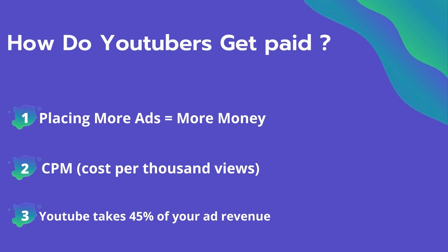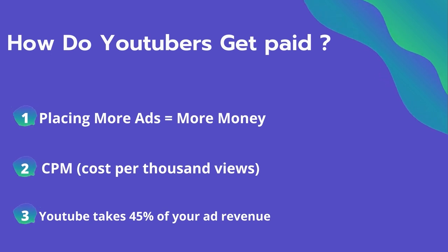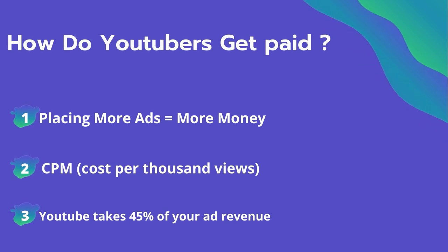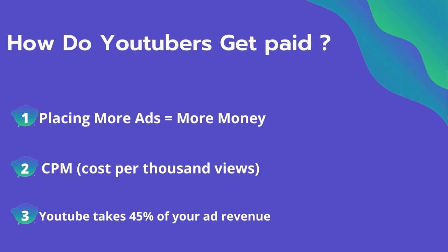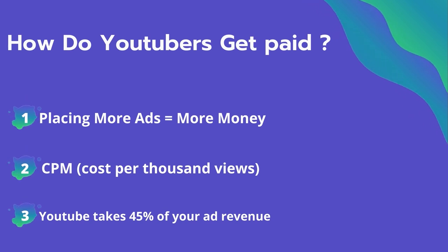The second thing is CPM — it means the cost per thousand views. It's the amount an advertiser pays to have his ad in your video, and they spend on average four dollars per thousand views. It's calculated based on how many people watch the video and from where they are watching. Many factors affect the CPM, including demographics, content, gender, and time of the watch. YouTube also takes 45% of your ad revenue from the advertising.